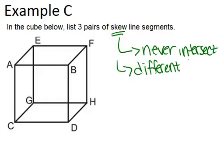In a cube, that means they have to be coming from different faces. For example, an answer would not be AB and CD. Those segments are parallel, not skew, because they're both in that same front plane ABCD. So let's find one.